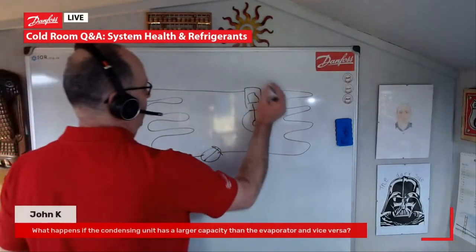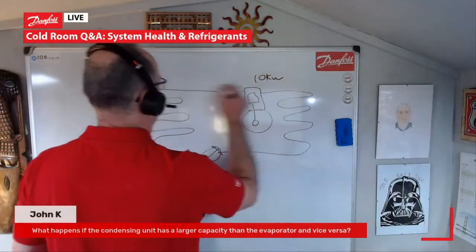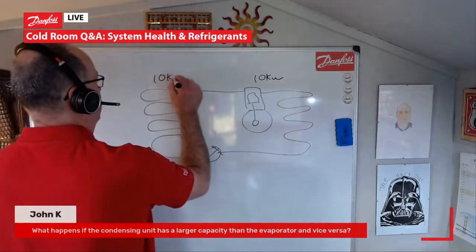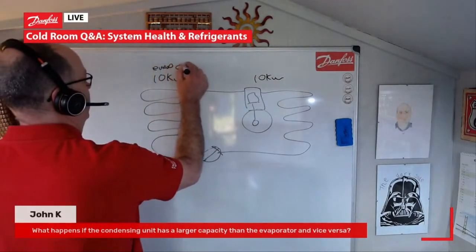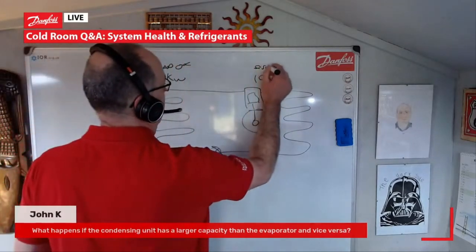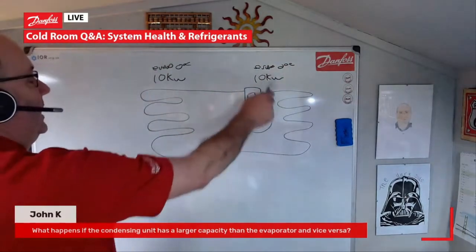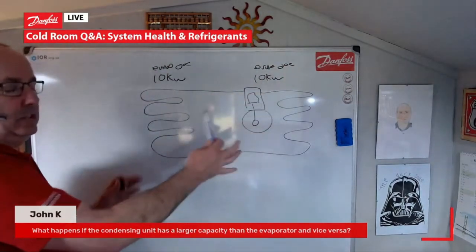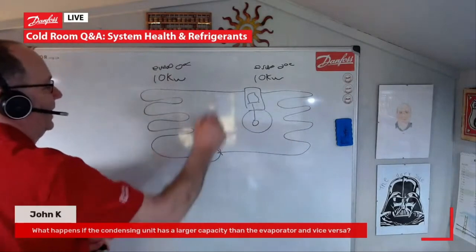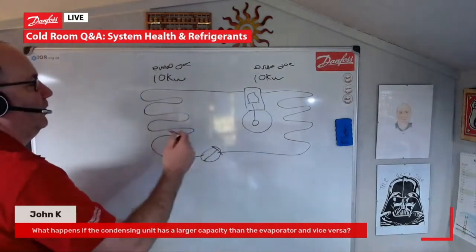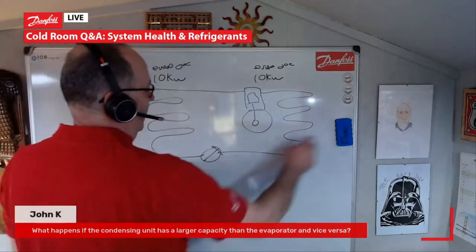So if that is 10 kilowatt and that's 10 kilowatt evaporating at zero — that is equally matched. The capacity of that and the capacity that we can extract from our room is the same. So that system is nicely matched.